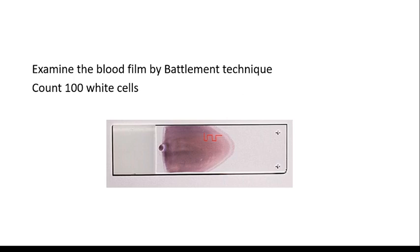Examine the blood film by battlement technique. Count 100 white cells. In battlement technique, cells are counted 3 fields along the edge, then 2 fields away from the edge, 2 fields along the edge and again 2 fields back to the edge. This sequence is repeated until a minimum of 100 cells have been counted.